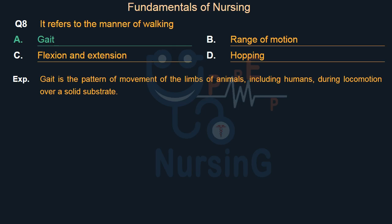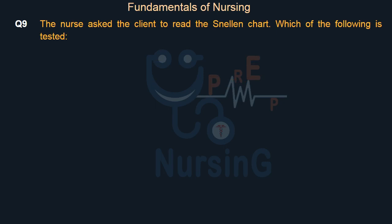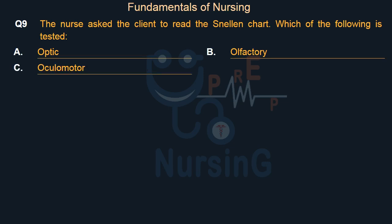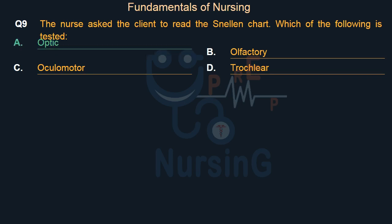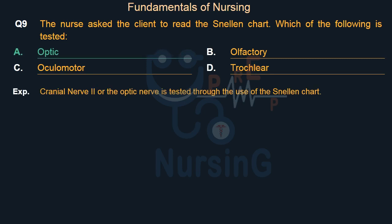The nurse asked the client to read the Snellen chart. Which of the following is tested? Option A — Optic. Option B — Olfactory. Option C — Oculomotor. Option D — Trochlear. Right answer is Option A: Optic. Cranial nerve 2, or the optic nerve, is tested through the use of the Snellen chart.